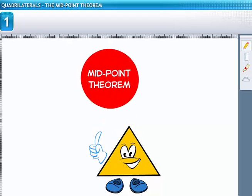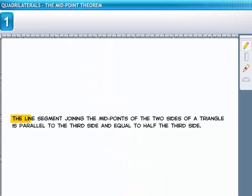Let's prove it. The line segment joining the midpoints of the two sides of a triangle is parallel to the third side and equal to half the third side.